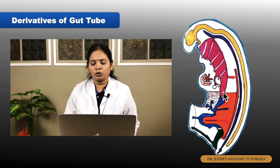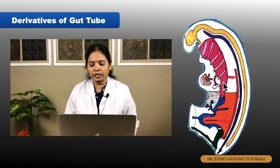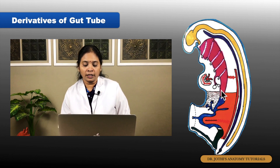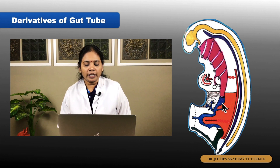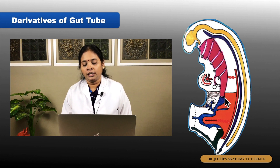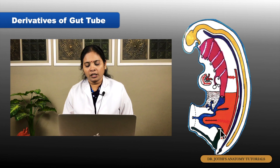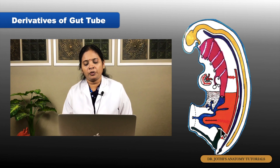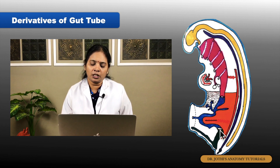An important feature of the foregut is the pharyngeal arches. The communication between the foregut and midgut is called the anterior intestinal portal. The communication between the midgut and hindgut is called the posterior intestinal portal.